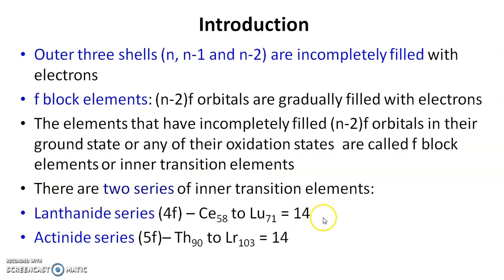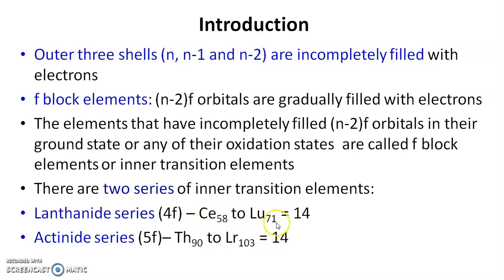There are two series of inner transition elements: lanthanides and actinides. Lanthanides are also called 4f elements because the 4f orbital is in the process of filling. Lanthanides are cerium to lutetium — cerium with atomic number 58 and lutetium with atomic number 71 — and there are 14 lanthanides.